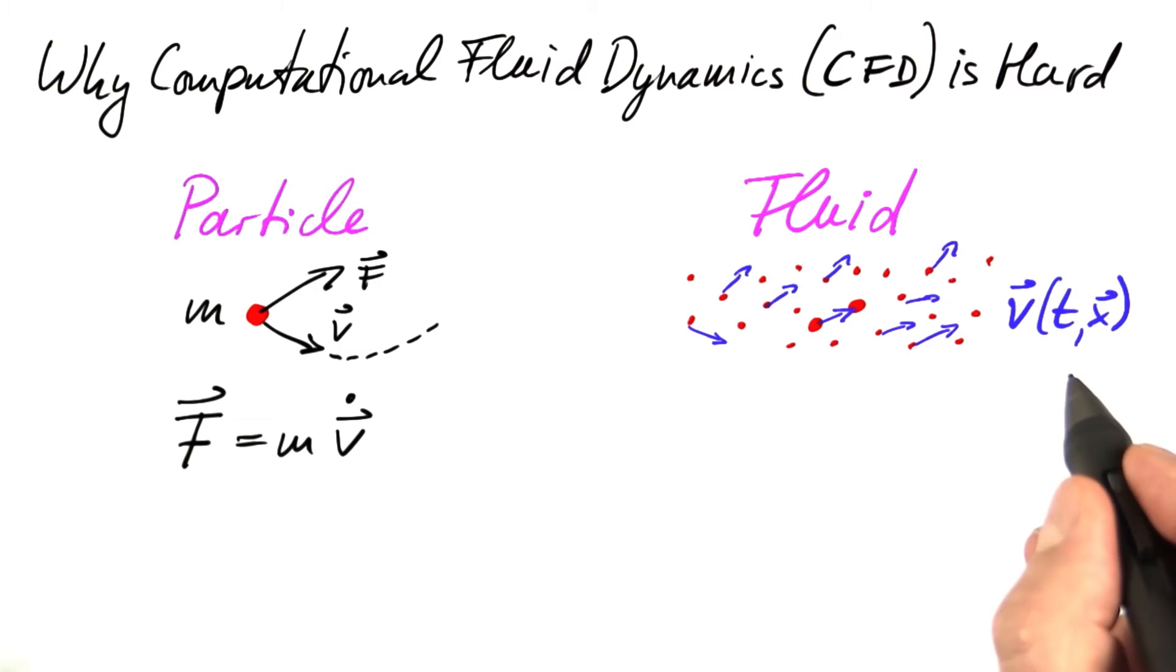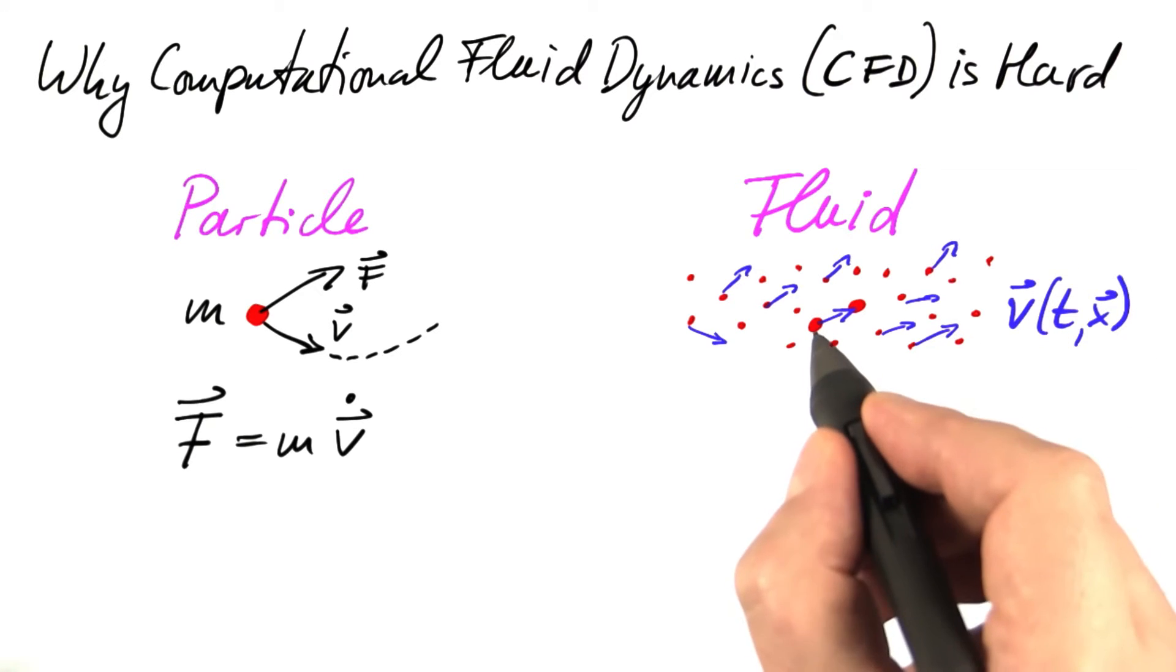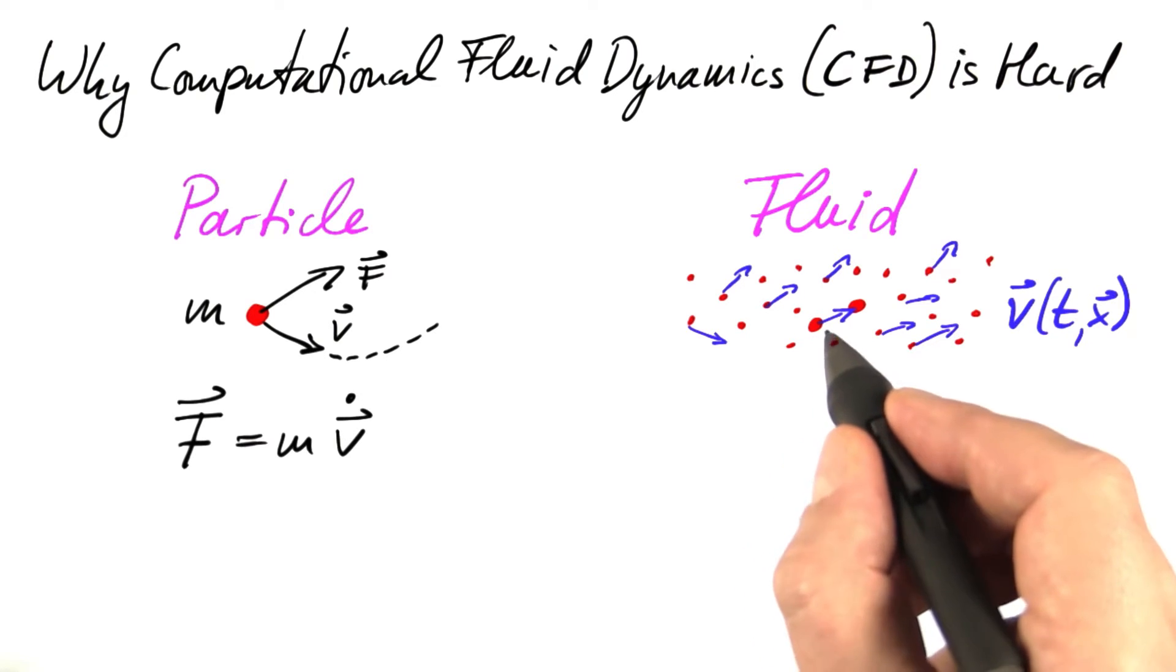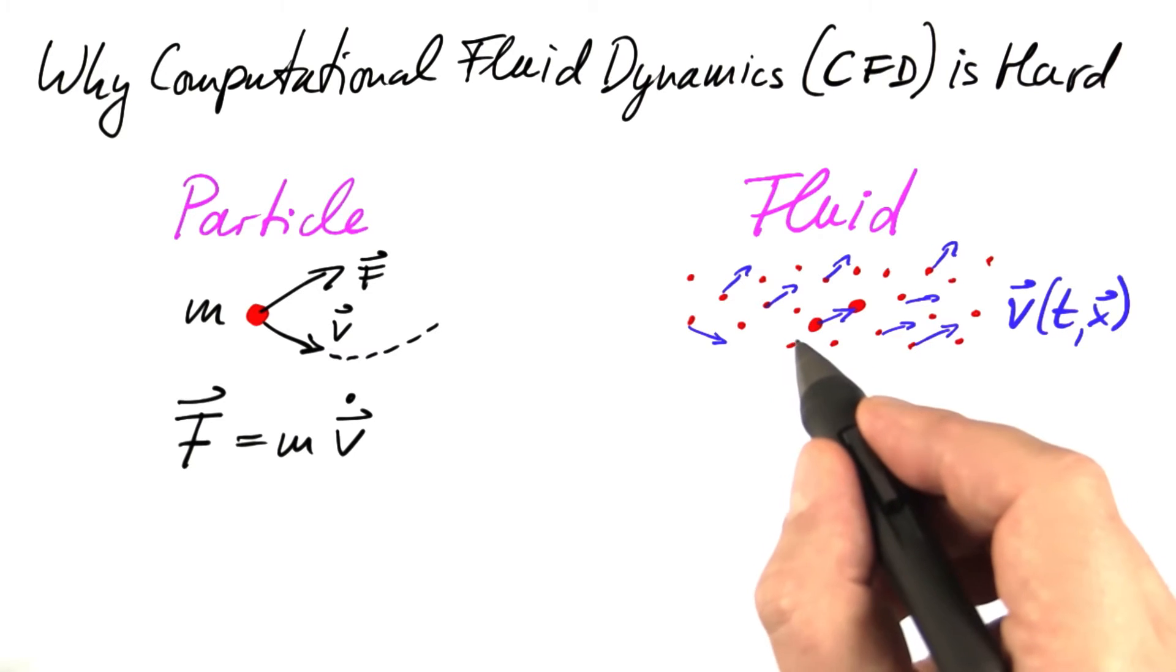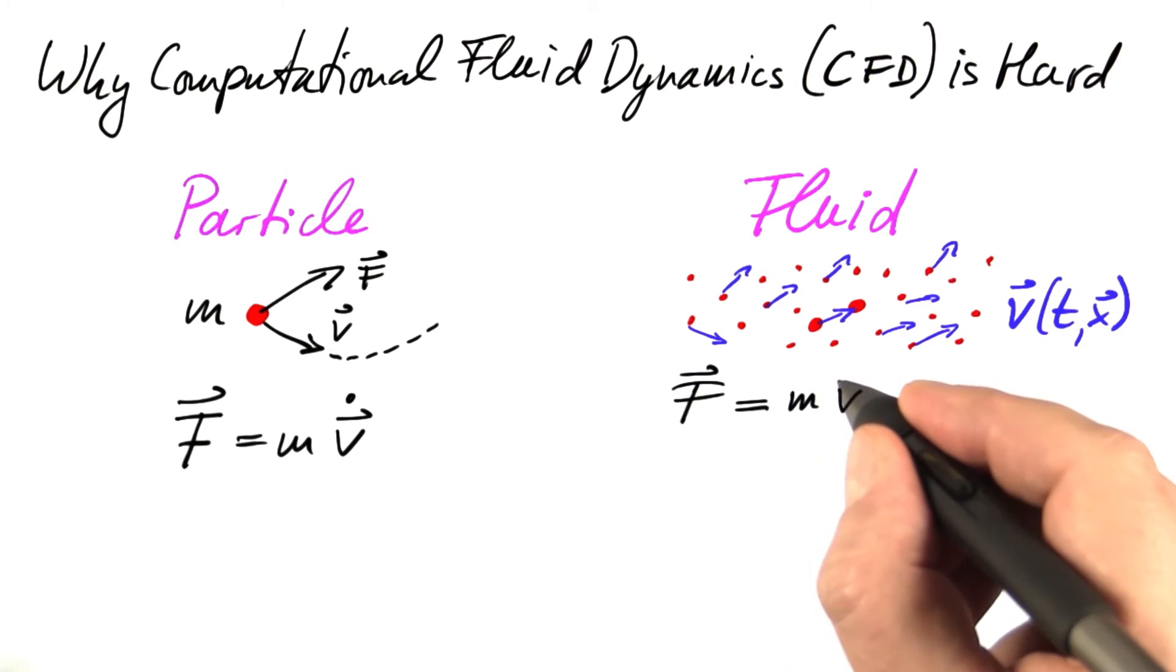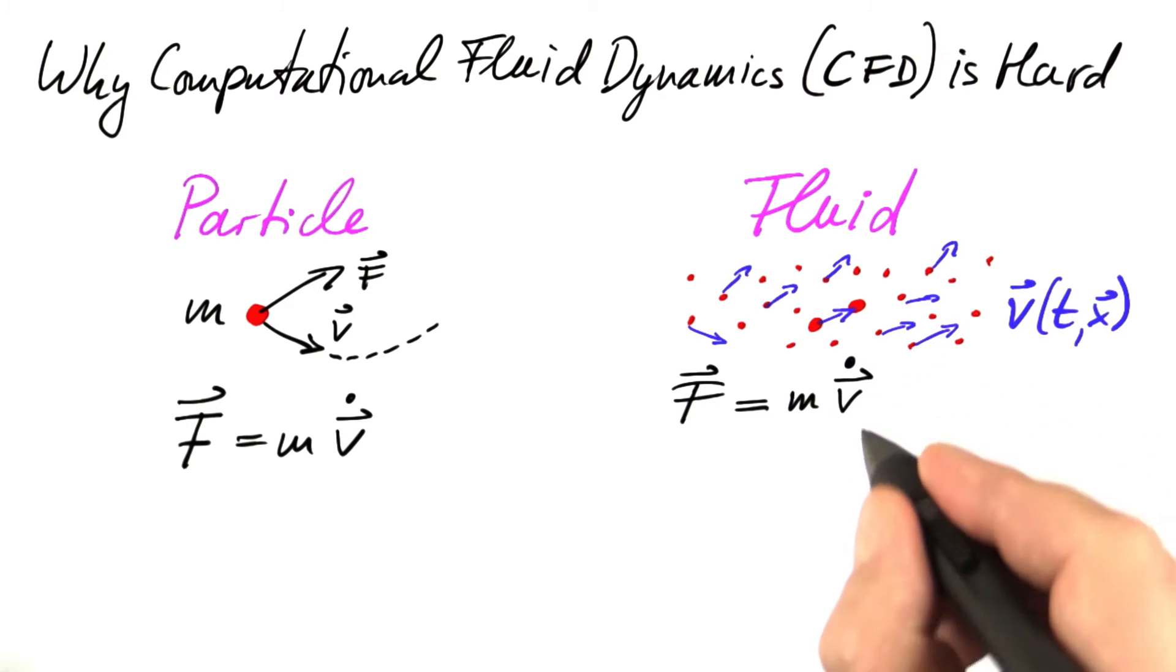So the velocity that we specify is the velocity of that particle at that instant of time. Before and after, most probably, this location is going to be occupied by other particles at other times. So when we write down Newton's equation for this particle, force equals mass times the derivative of velocity with respect to time, we have to be a little careful.